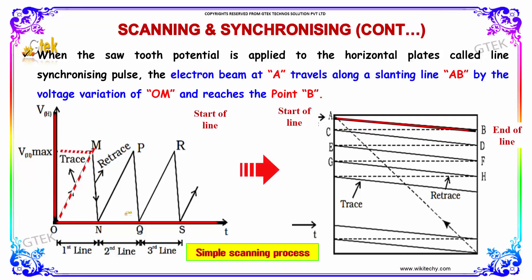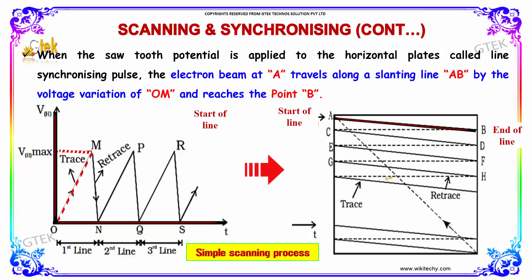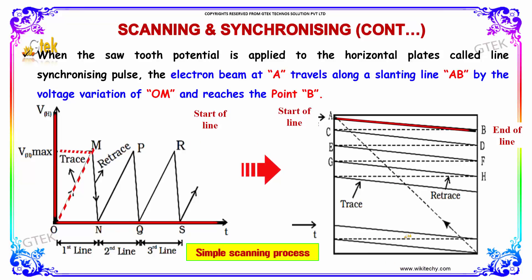From here we get the second line, then the third line. This is how the variation works. This line is called the trace and the return line is called the retrace. This is how the simple scanning process works.